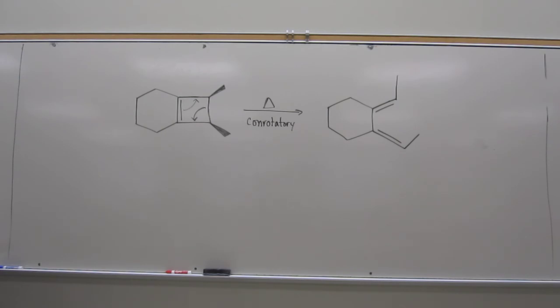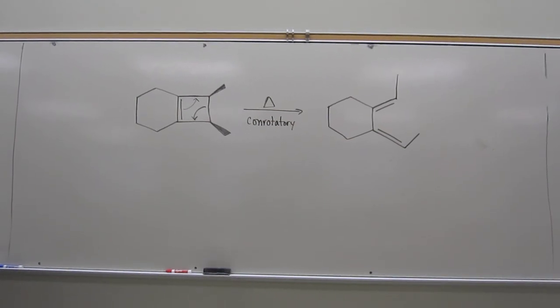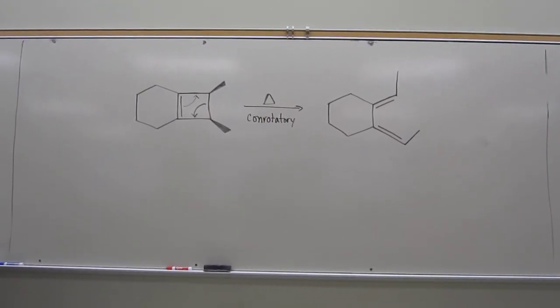And opposite for the other one. So if heat is con in the four-electron, then it means light is con in the six-electron. Okay, any more questions about this one or its partner?